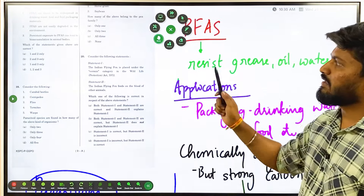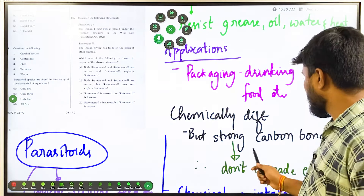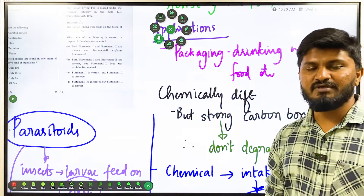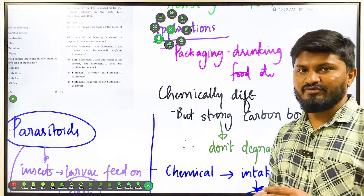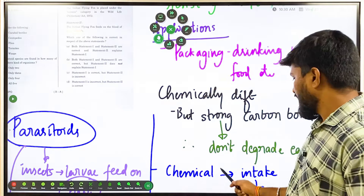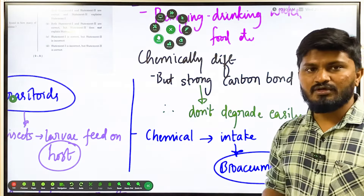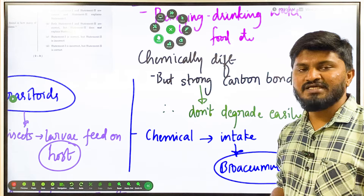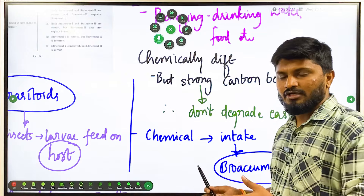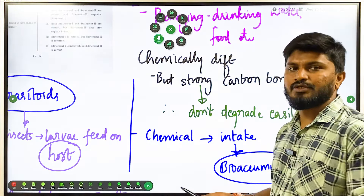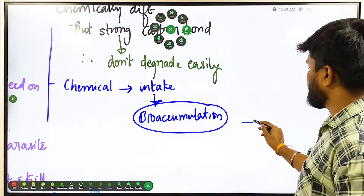Statement 2 says PFAS are not easily degraded in the environment — this is correct because PFAS have a strong carbon bond and do not degrade easily, so they act as a pollutant. Statement 3 says persistent exposure can lead to bioaccumulation in the body. Since PFAS is present in food and water packaging, if you consume those things it will bioaccumulate. Bioaccumulation is the accumulation of pollutants from nature to the first species in a trophic level.